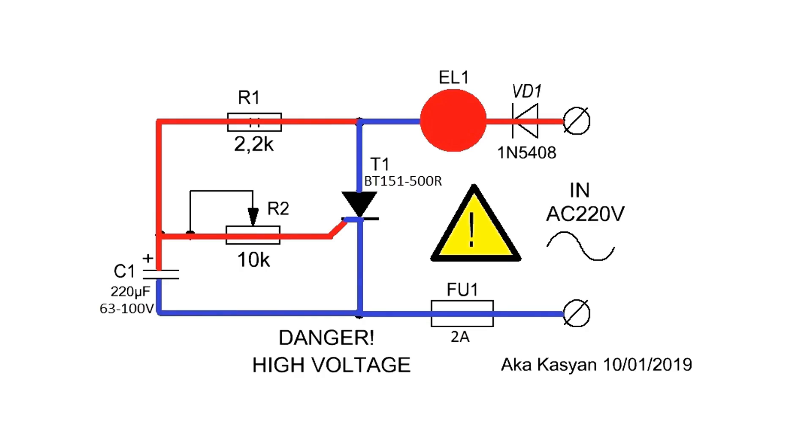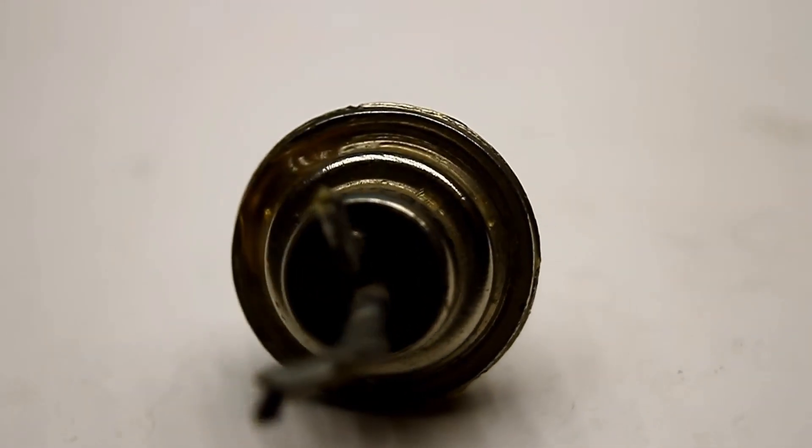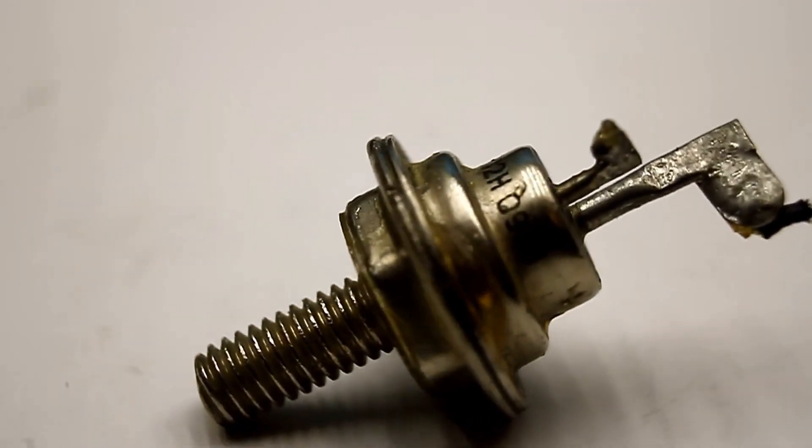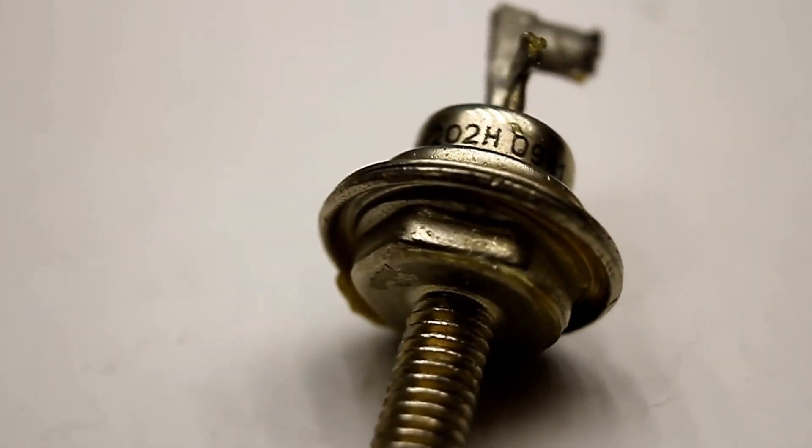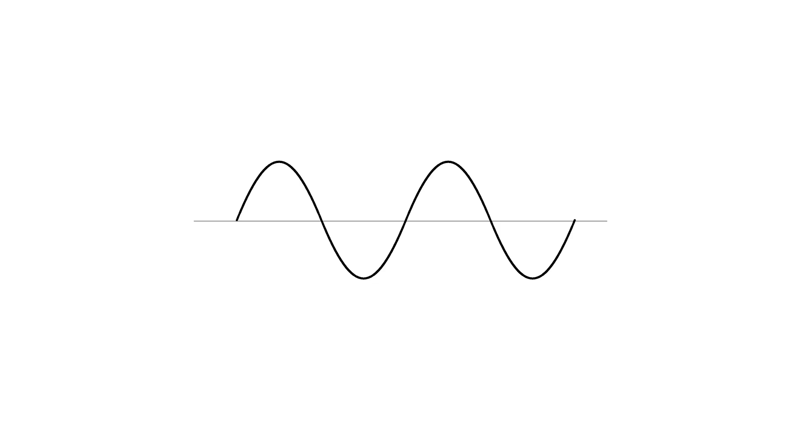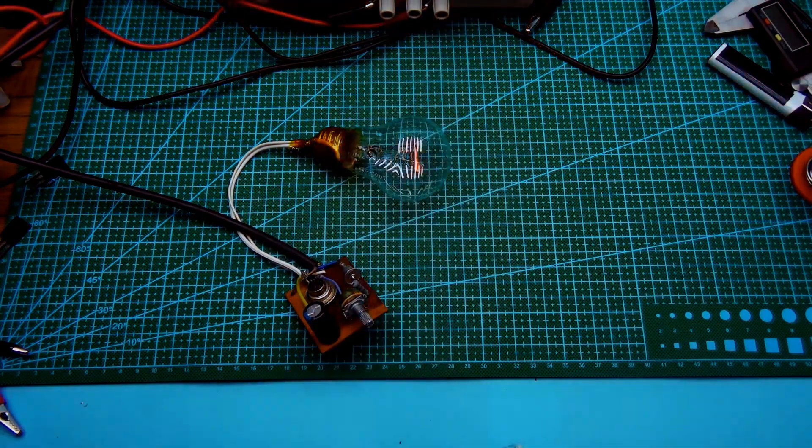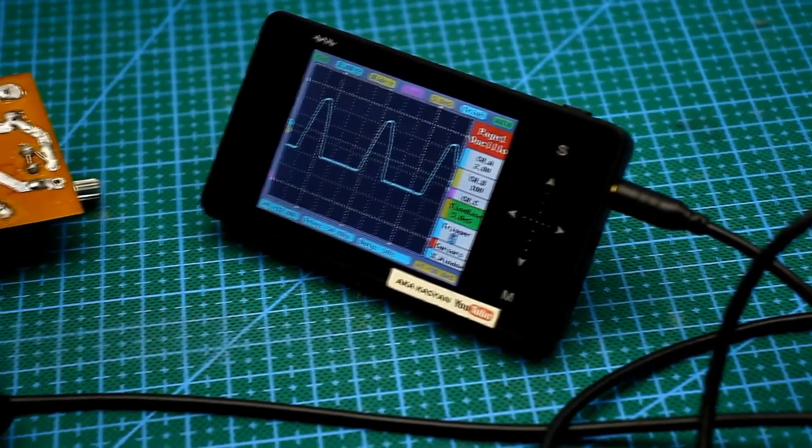In direct current circuits, closing a thyristor is not that easy. In alternating and pulsating circuits, the thyristor will only close when the voltage passes through zero. It's the same as temporarily removing the voltage from the thyristor, only it happens naturally. In our case, it's precisely the pulsating voltage.